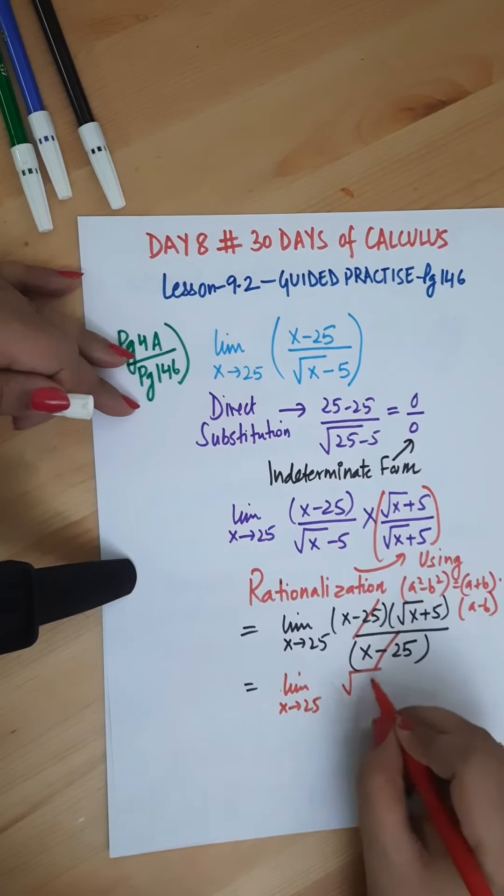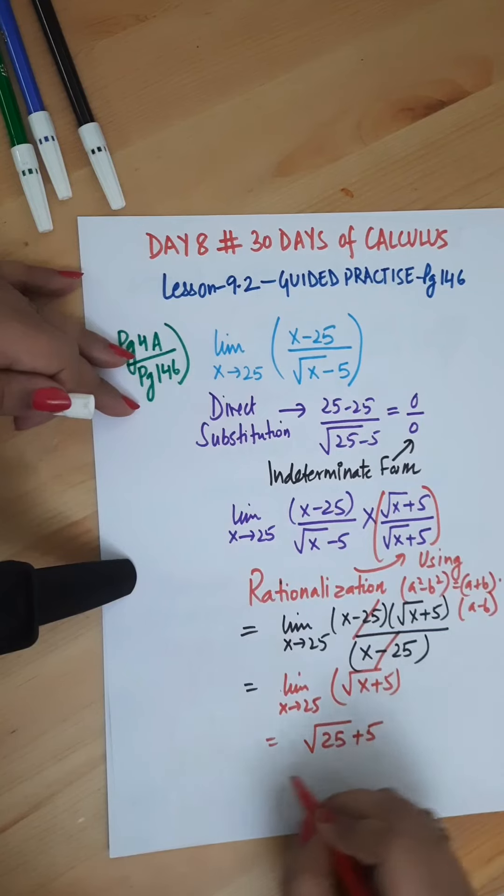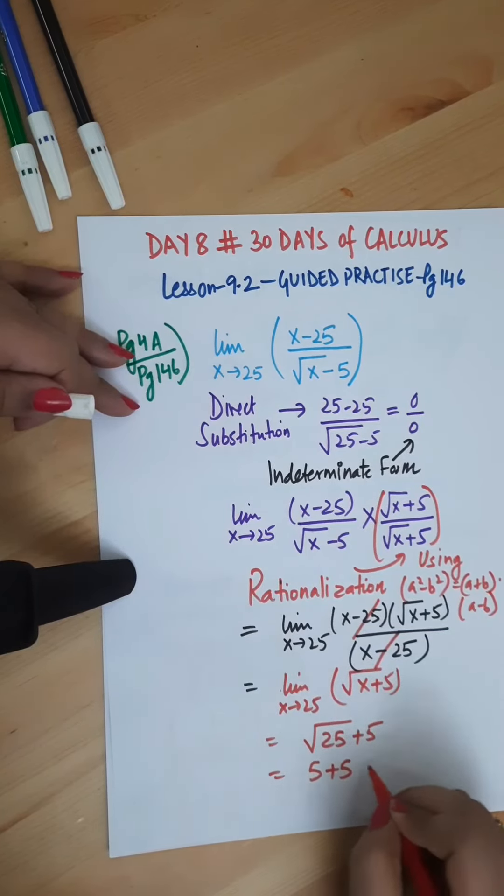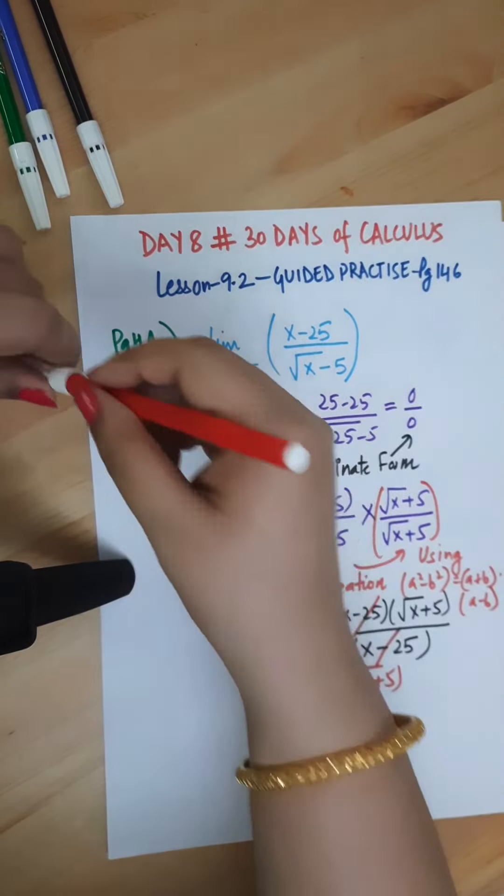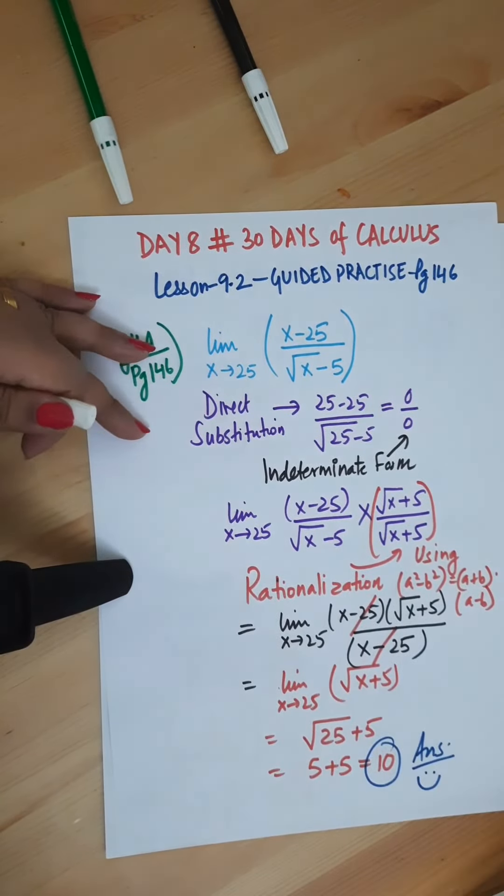So x minus 25 being common in numerator and denominator gets cancelled, and we are only left with limit as x approaches 25 of square root x plus 5, which on direct substitution gives us the answer as 10. So that's your final answer.